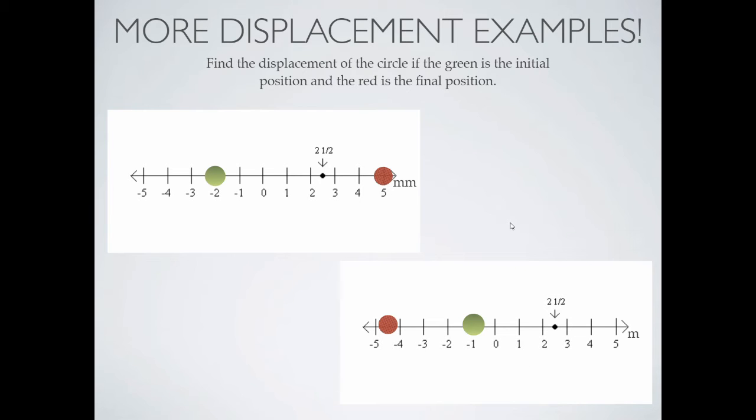Let's practice more of these. I want you to find the displacement of the circle if the green is the initial and the red is the final position of some object.